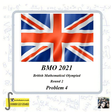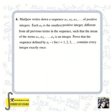BMO 2020 Problem 4, British Mathematical Olympiad Round 2. Matthew writes down a sequence a1, a2, a3, and so on of positive integers. Each a_n is the smallest positive integer different from all previous terms such that the mean of the terms a1, a2, ..., a_n is an integer. Prove that the sequence defined by b_i = a_i minus i, for i = 1, 2, 3, ..., contains every integer exactly once.